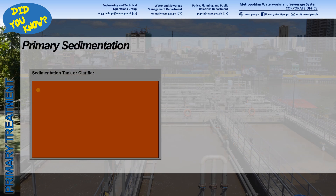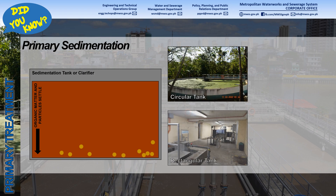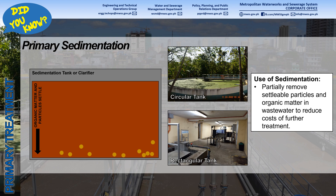Primary treatment starts with sedimentation. In sedimentation, the organic matter and particles present in the wastewater settle at the bottom of sedimentation tanks or clarifiers. Typical configurations of sedimentation tanks are circular and rectangular. Sedimentation is used to partially remove settleable particles and organic matter to reduce costs of further treatment.